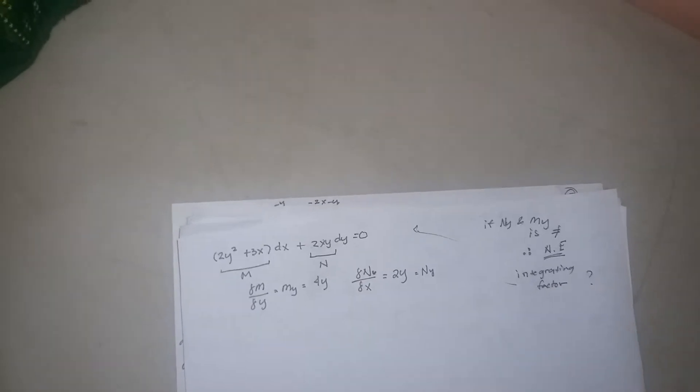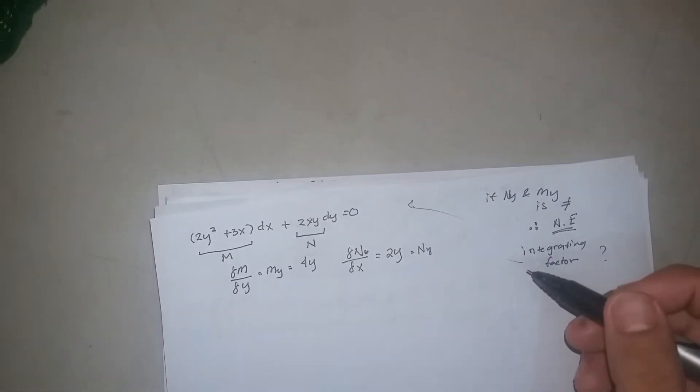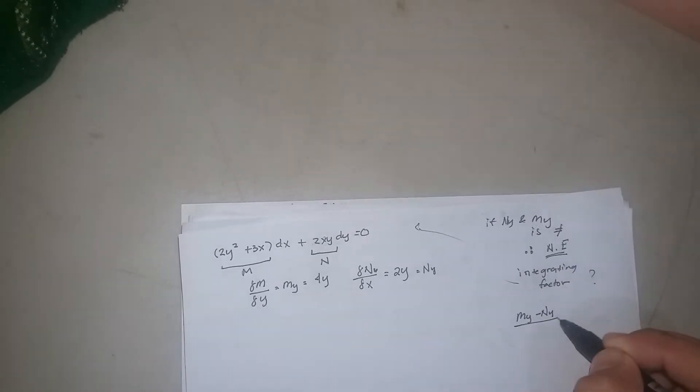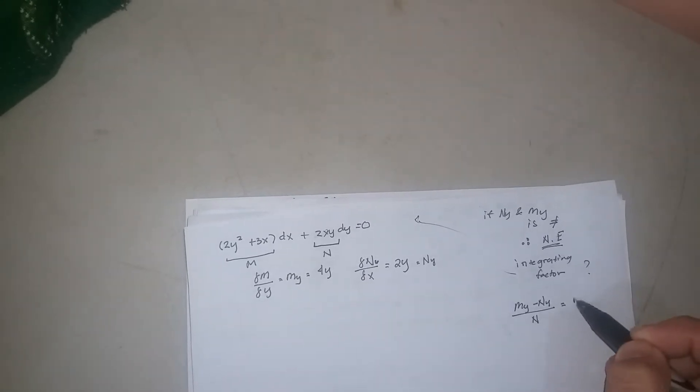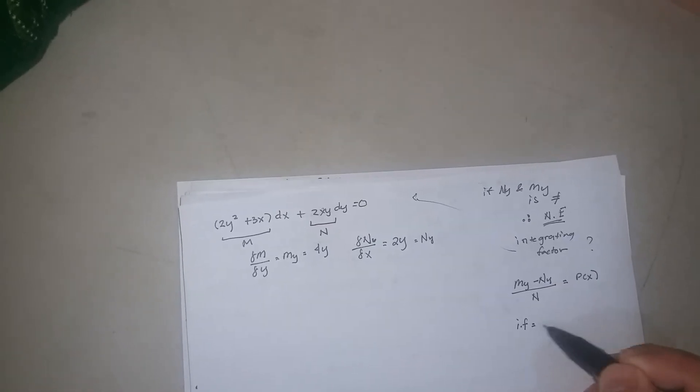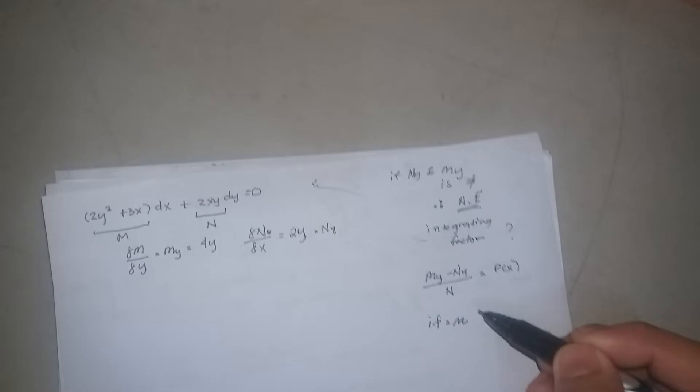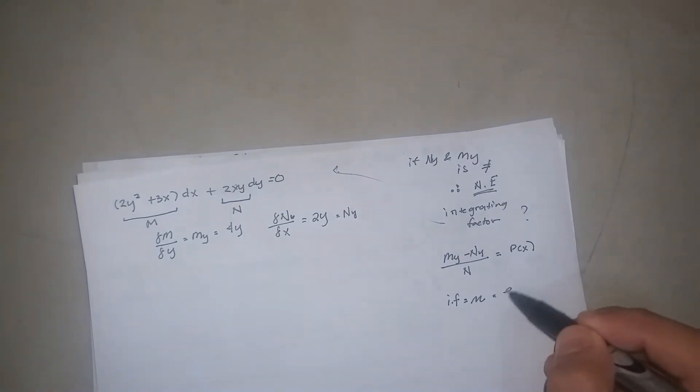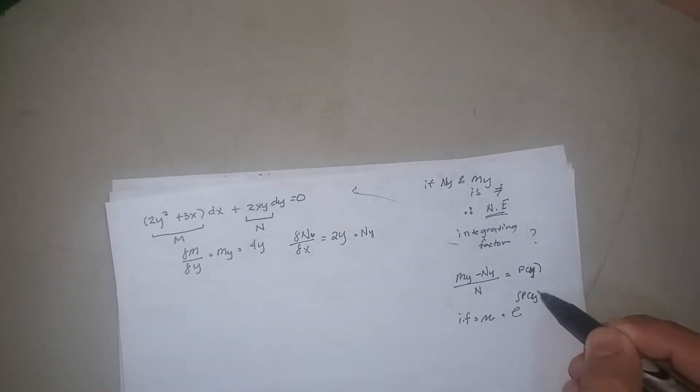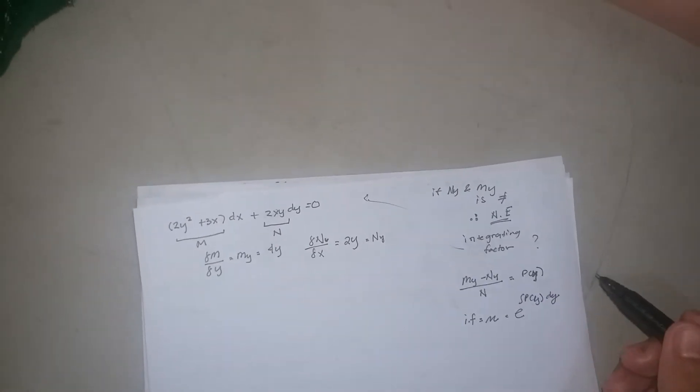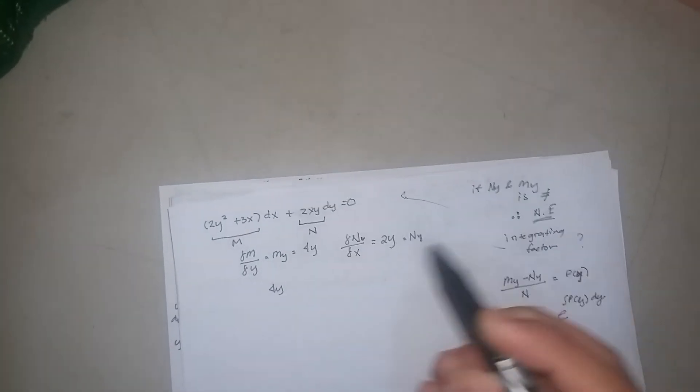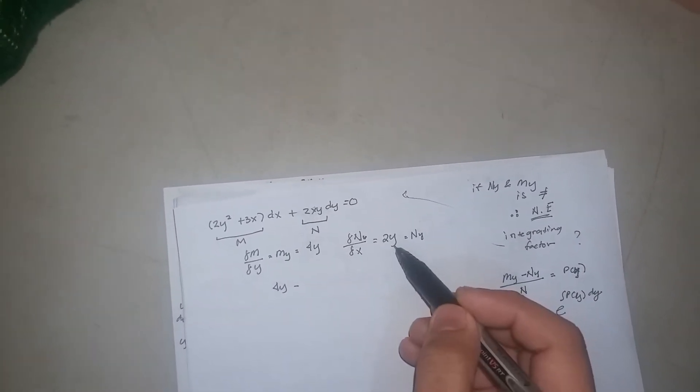How to get the integrating factor? First we're gonna get it through My minus Nx over N equals to P of x. And then our integrating factor, we can use mu for this integrating factor, so mu equals e to the integral of P of x... this is P of y, D y, applied here.